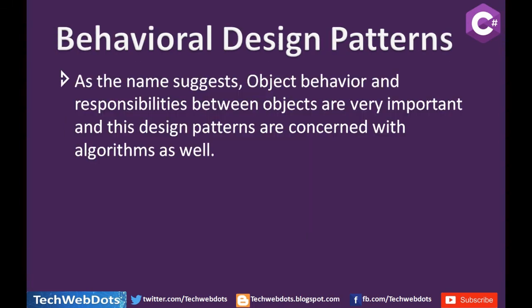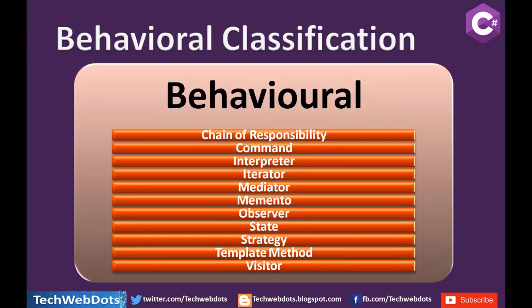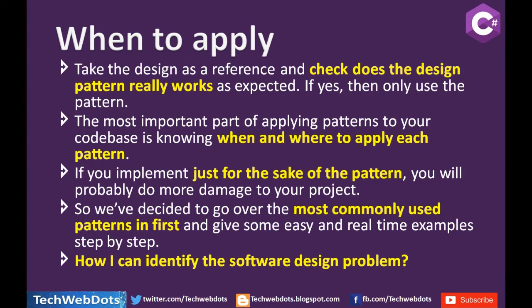Next is the Behavioral design pattern. As the name suggests, it deals with object behavior and responsibilities between objects, and is also concerned with algorithms — how the flow will be between objects. Its classifications are: Chain of Responsibility, Command, Interpreter, Iterator, Mediator, Memento, Observer, State, Strategy, Template Method, and Visitor.